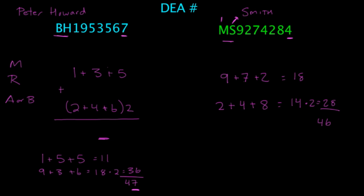And so this right here is not a valid DEA number because the last number should be a 6. So you would know that this is not the correct DEA number. So that's how you do the DEA number.